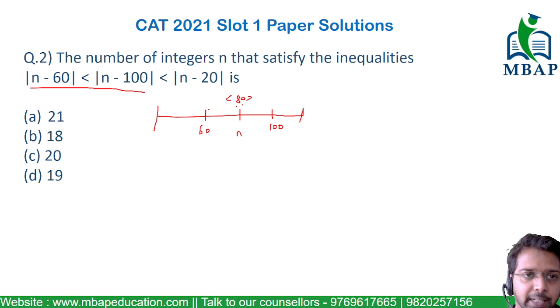Certainly if it is less than 80, let's say 70, the difference of 60 to 70 is 10 and 70 to 100 would be 30. So any value which is less than 80 will satisfy this condition where |n-60| will be less than |n-100|.